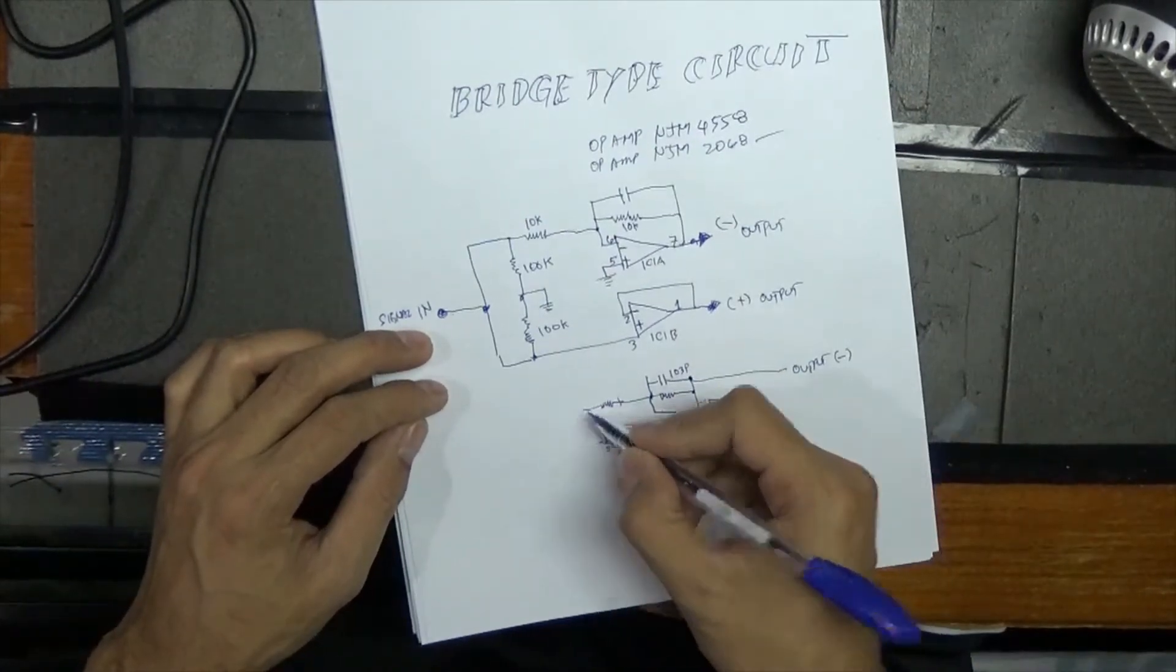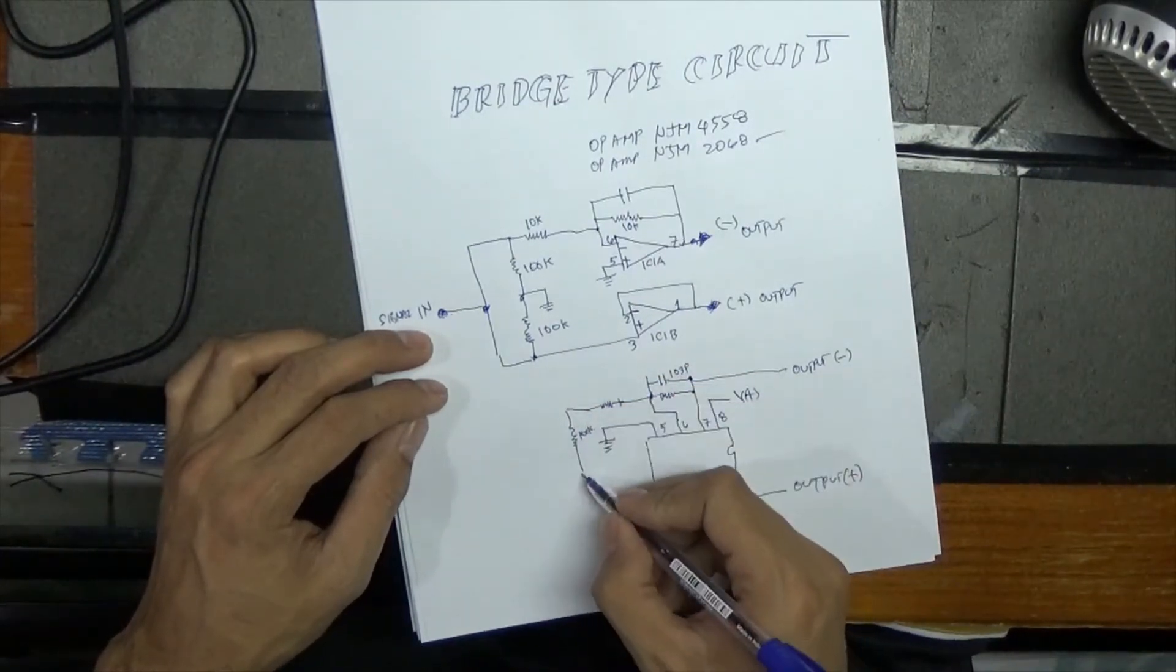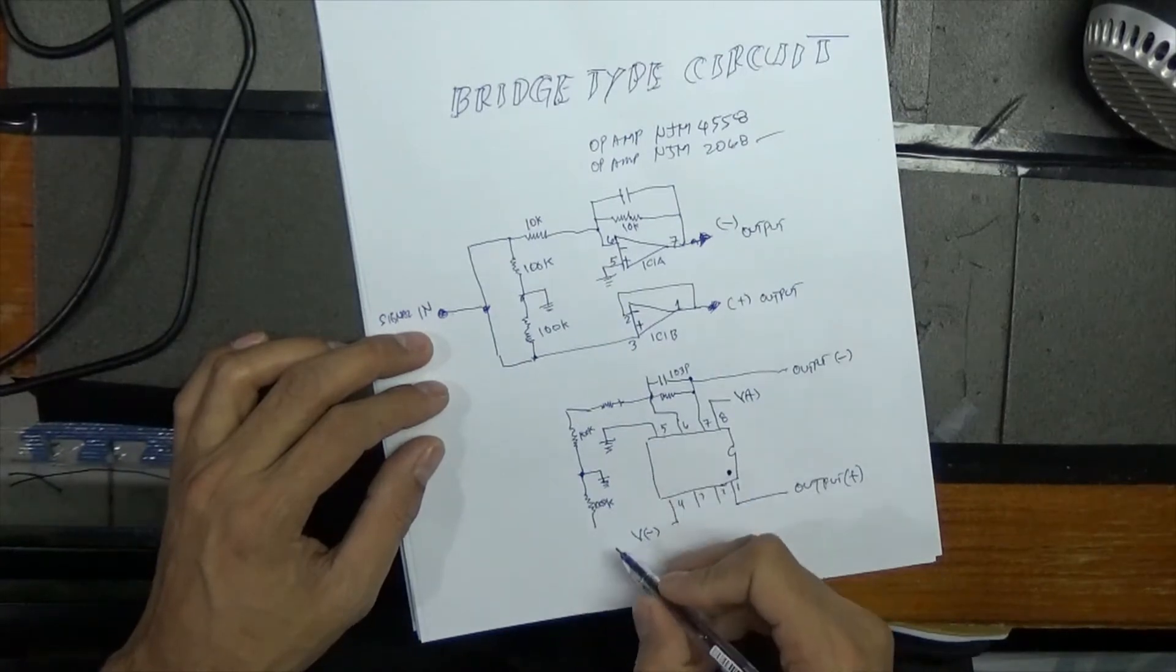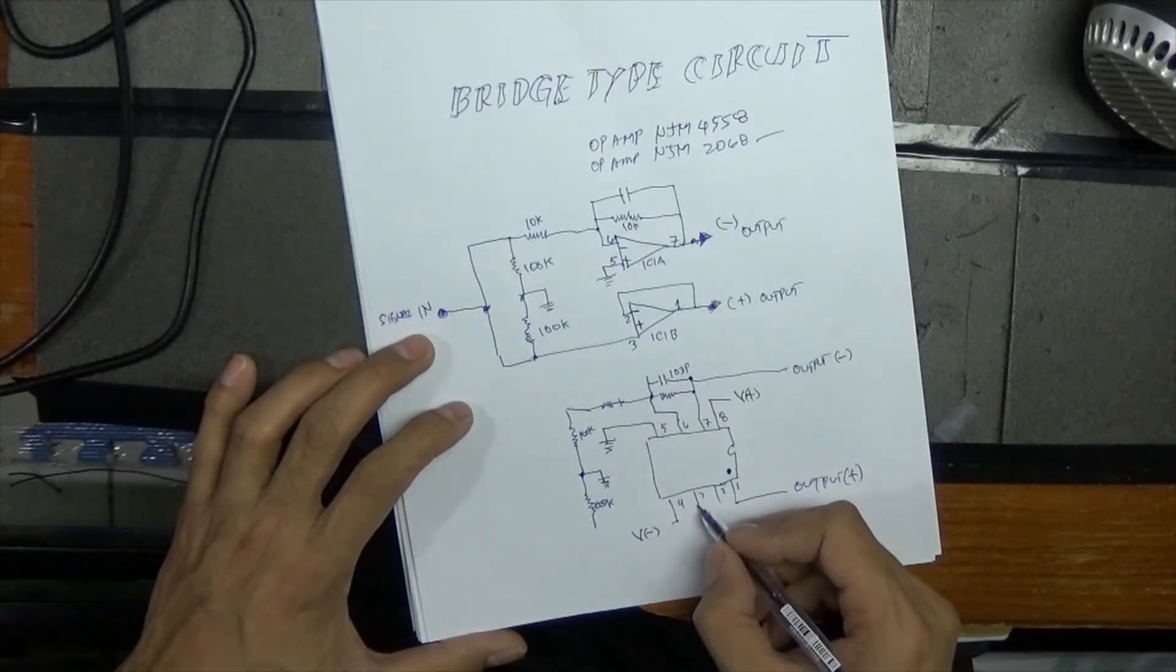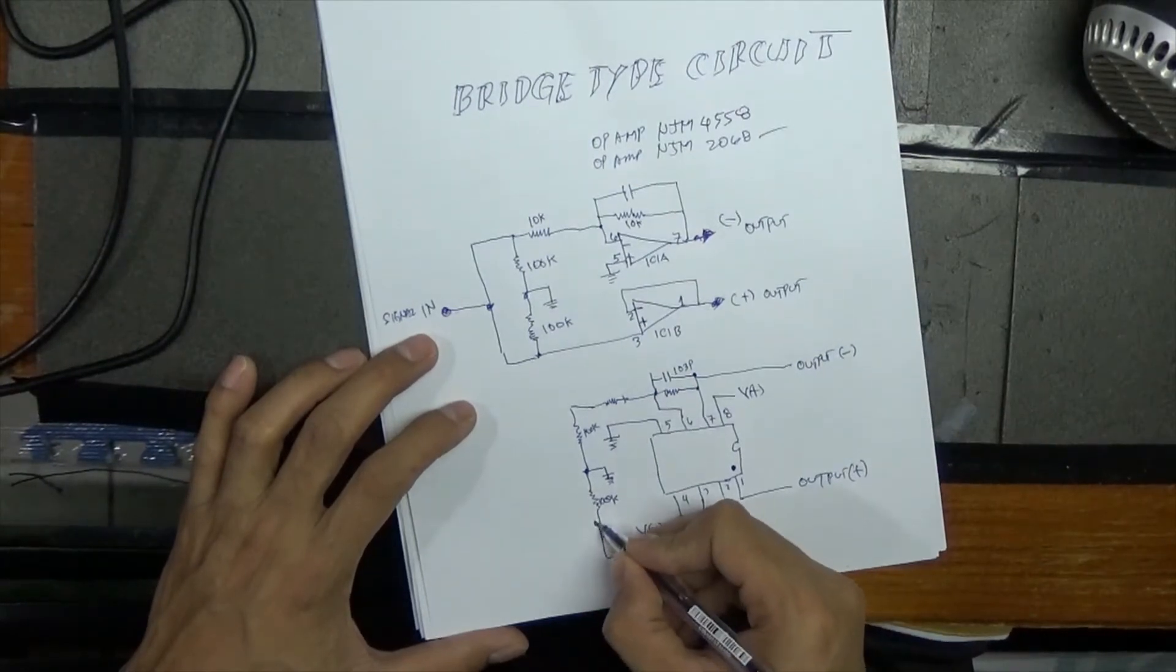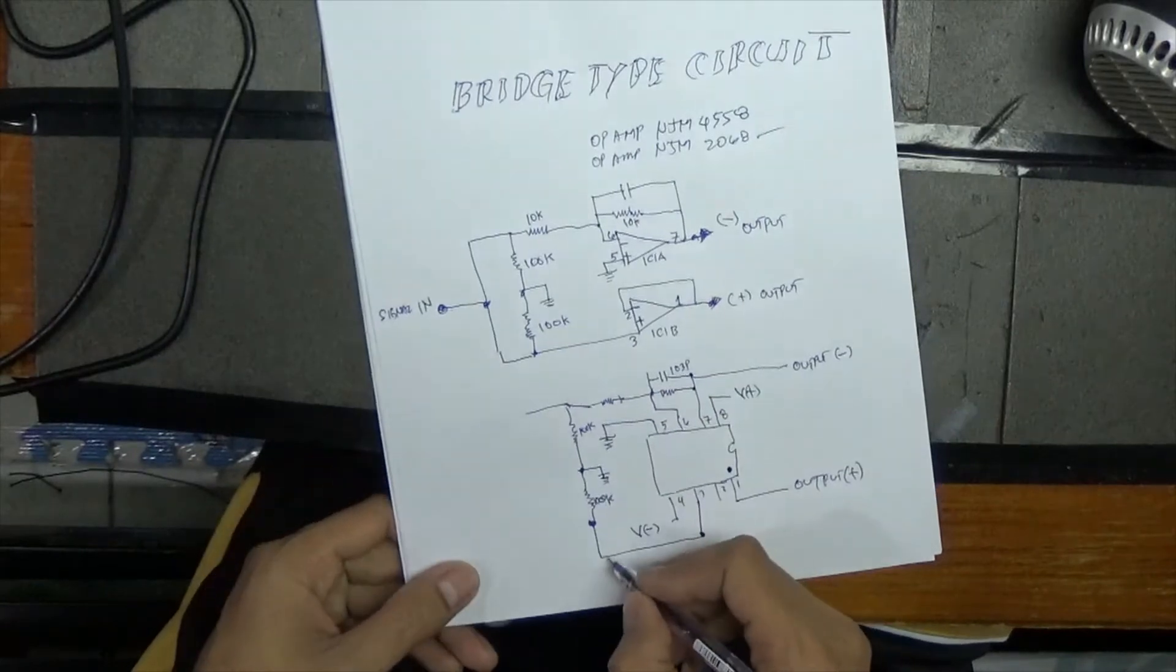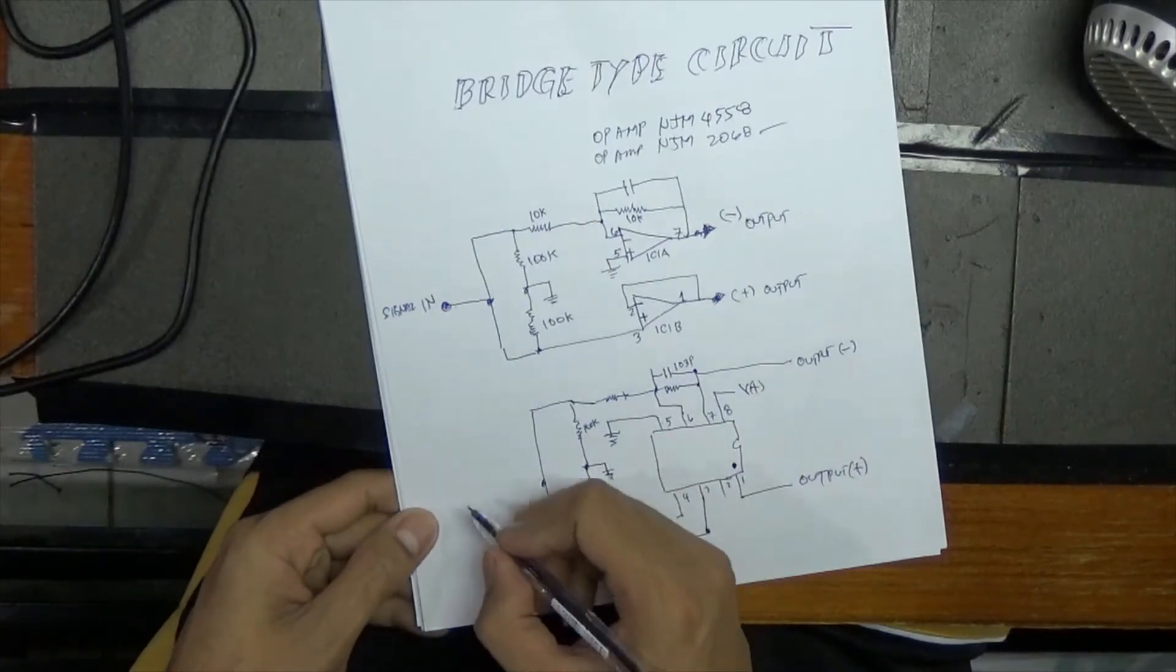This is very simple. One, another, and ground. Another 100K. Three, in number three. Three is here. This one is connected together and we have now signal in.